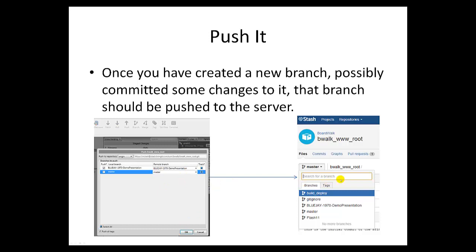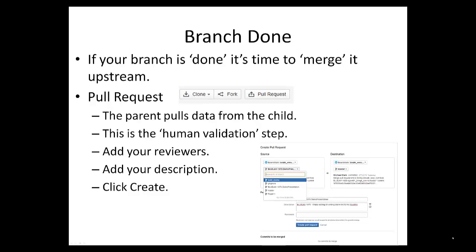Once you've clicked OK and it has pushed, you'll see your branch if you go to Stash and click the Branch drop-down — you should see your branch. If your branch is finished and everyone is done working on it, then it's time to merge that branch upstream. We do that with something called a Pull Request. The button is right next to Clone and Fork: Pull Request.